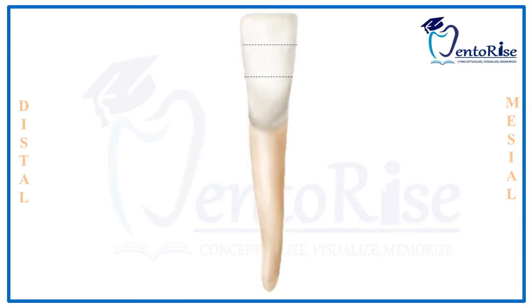Moving to the next heading under the labial aspect: the outlines of the tooth. Unlike the maxillary incisors, in which significant differences were present between the mesial and the distal outlines, similarities are present between the mesial and distal outlines of the permanent mandibular central incisor.